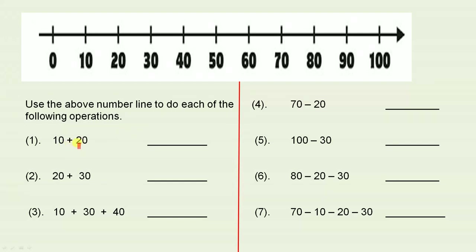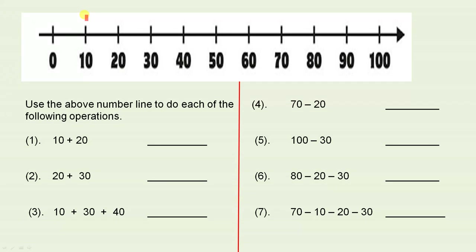Ten plus twenty. Remember from the previous slide — place your pencil on the ten and count by tens. We have to count twenty altogether, but we're counting by tens because these numbers go up by tens. Pencil on the ten: ten, twenty — so the answer is thirty.